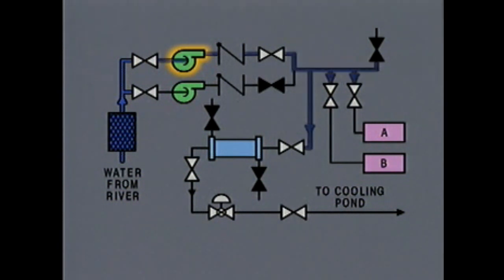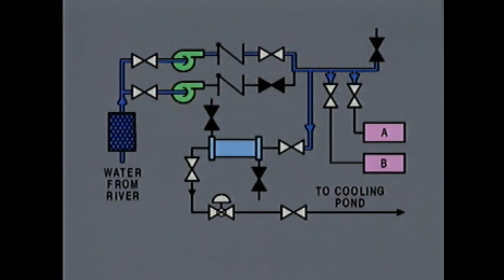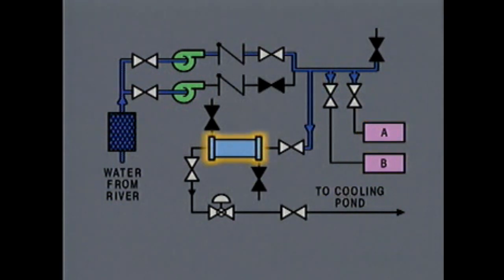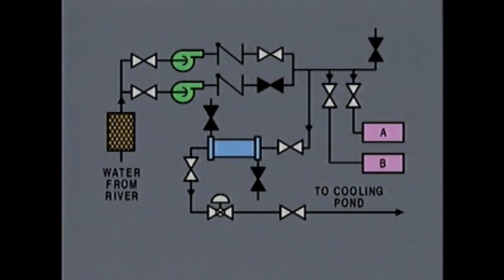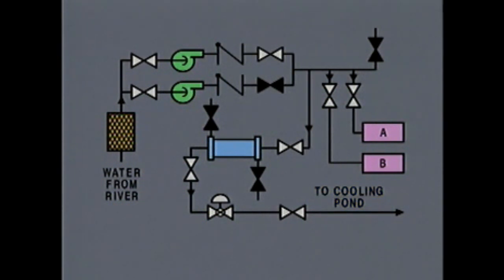The valves are in the lines that supply the cooling water system we'll be working with. One of these pumps moves the water through a main line, and the other pump is a spare or backup pump. The main line supplies cooling water to two process systems, labeled A and B, and a lube oil cooler. The water from the lube oil cooler is discharged to a cooling pond.